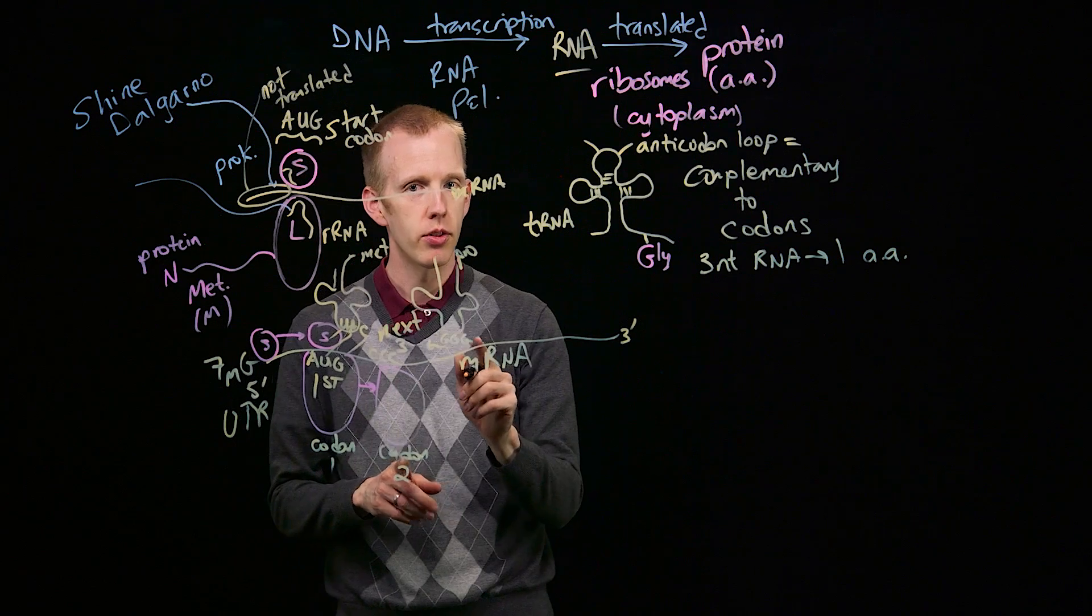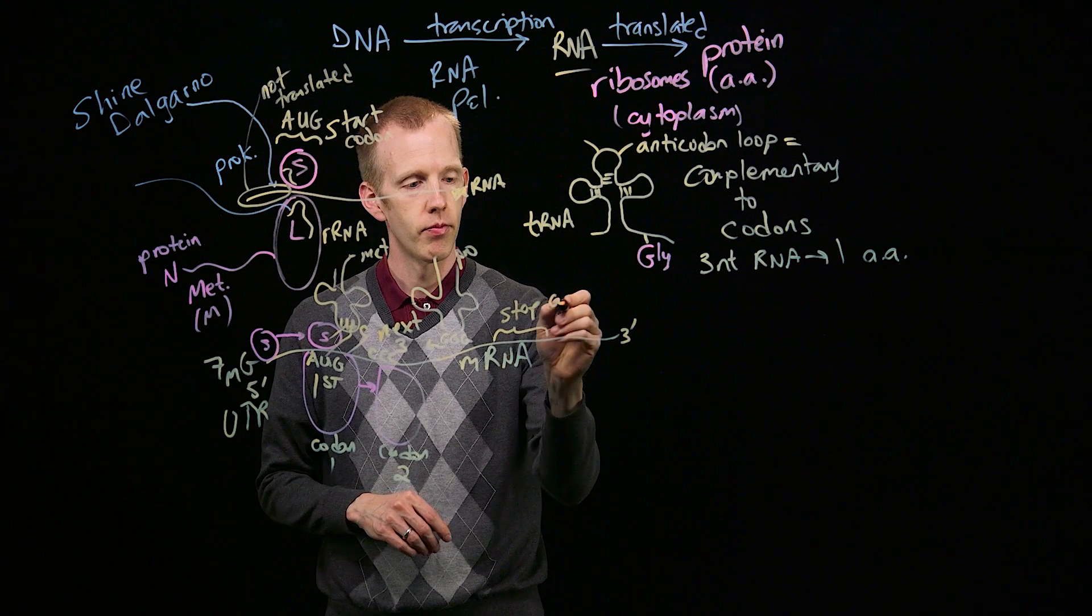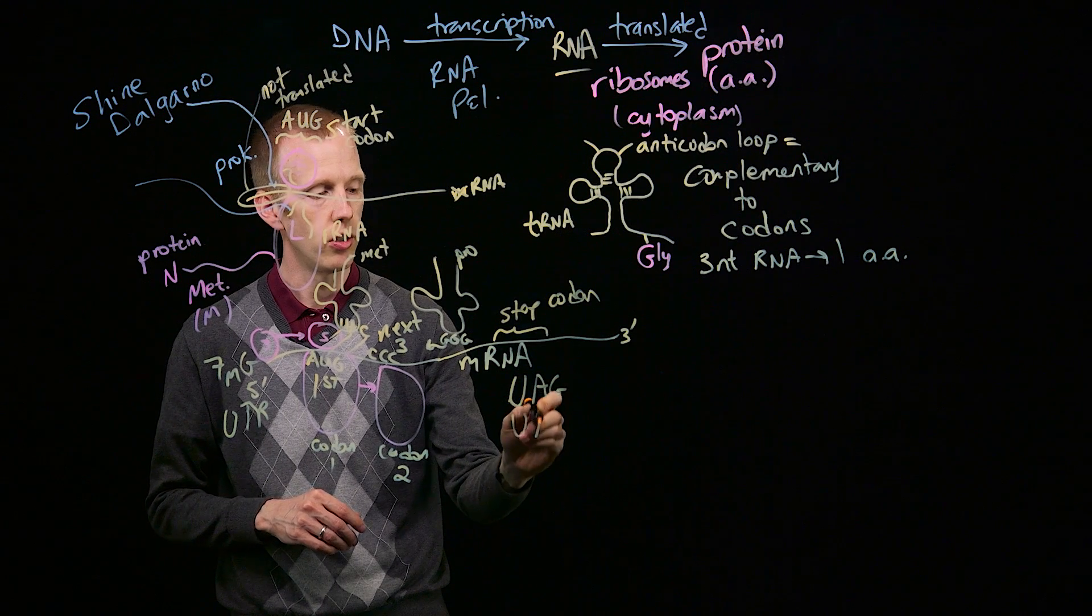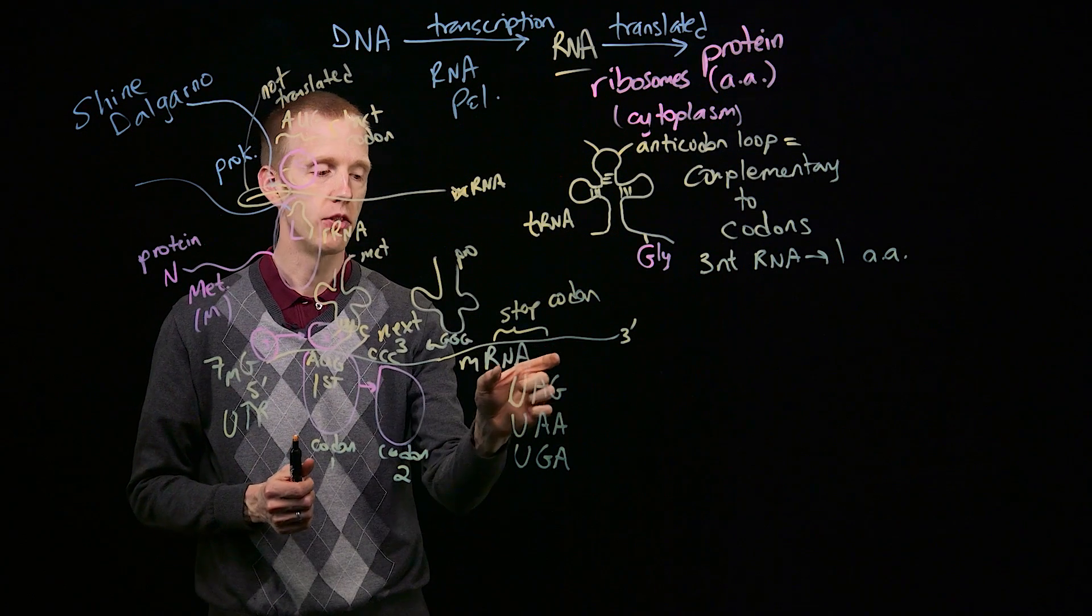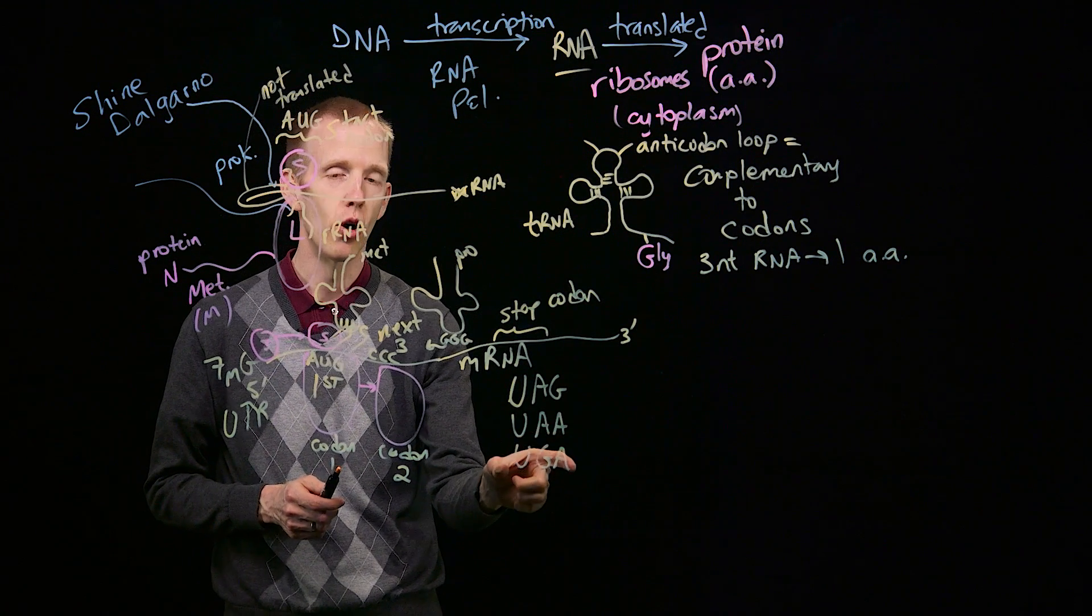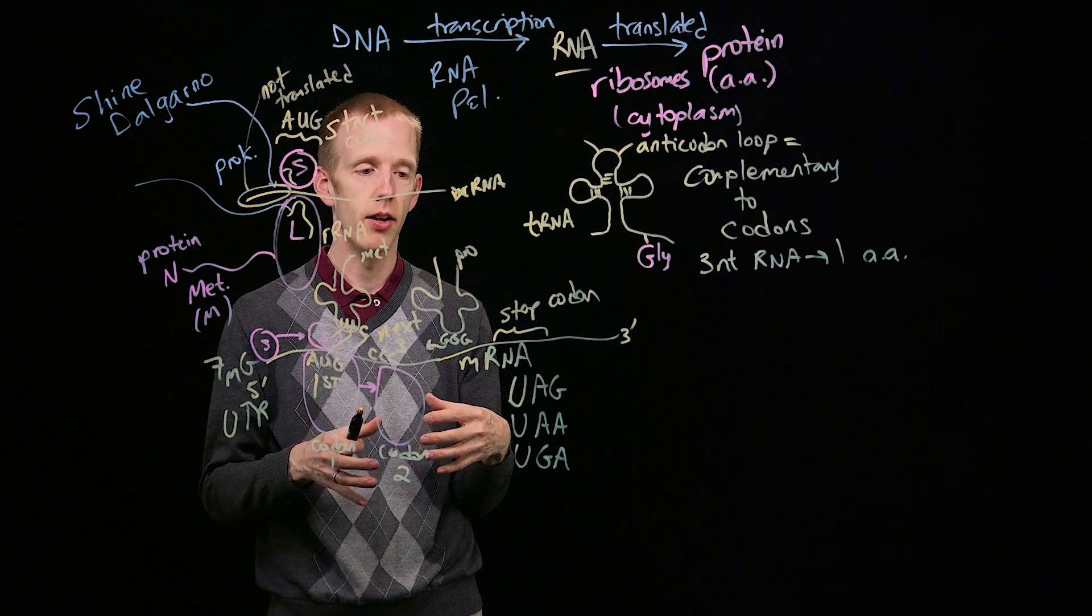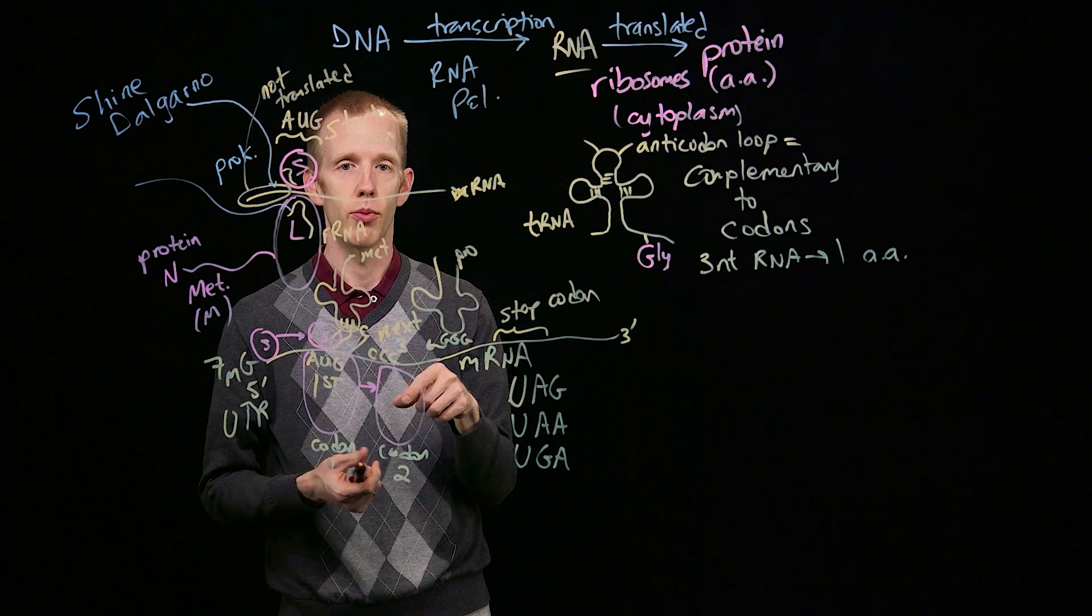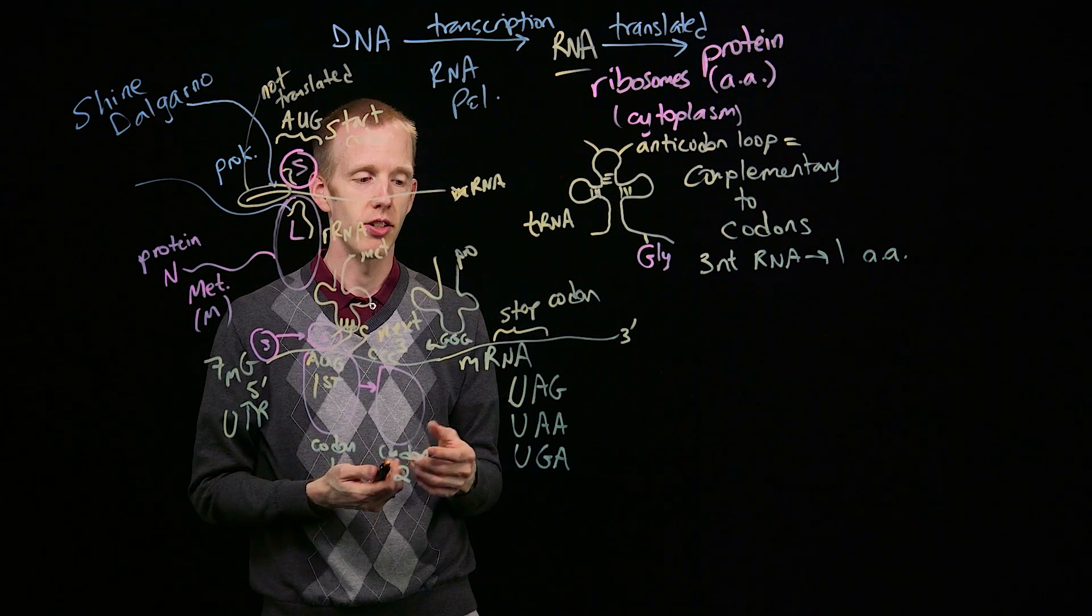So here's the 3' end, and translation stops when a stop codon is encountered. There are 3 different stop codons, UAG, UAA, and UGA. And when a ribosome arrives at one of those 3 codons, there are no transfer RNA molecules that match with their anticodon those 3 codons. And so the ribosome stops, it doesn't know what to do, it doesn't have a transfer RNA come in and bring an amino acid. And when that ribosome stops at the stop codon, another protein called a release factor enters the ribosome and causes the small and the large subunits to fall off of the RNA molecule, and translation ceases.